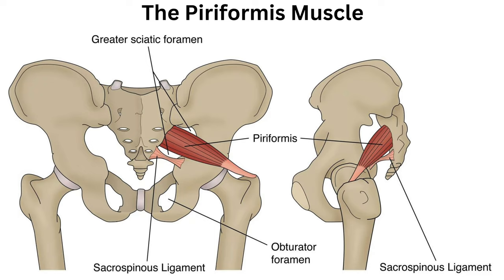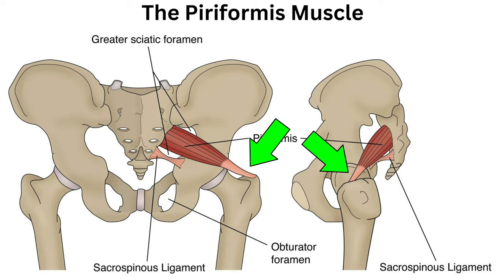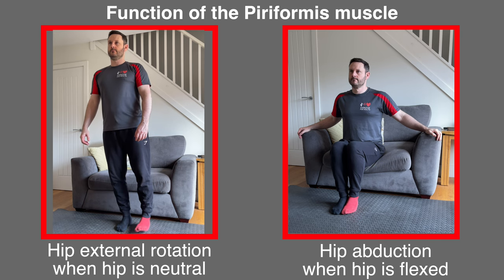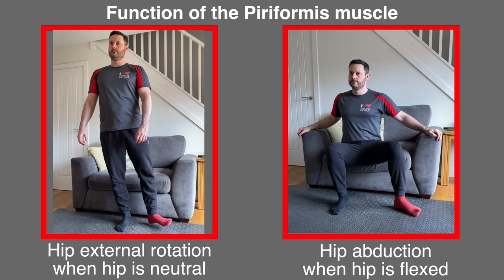So first of all let's look at what the piriformis is. It's a muscle located deep in your buttock under your glutes, and horizontally attaches the base of the spine in the sacrum at the front to the head of the thigh bone or greater trochanter further back. Its main functions are to externally rotate the hip joint outwards when the leg is in alignment with the body, such as when standing or lying down, and it also abducts the hip when the hip is flexed, such as when in a seated position.